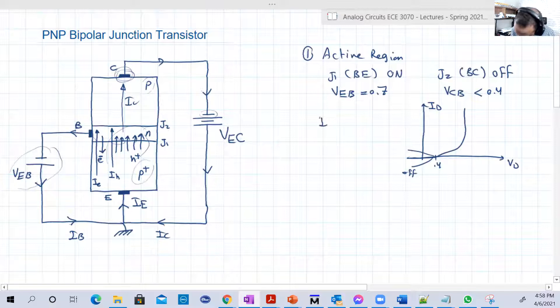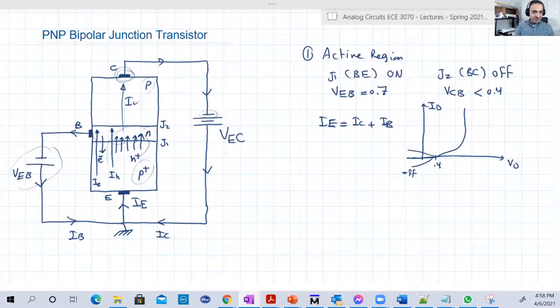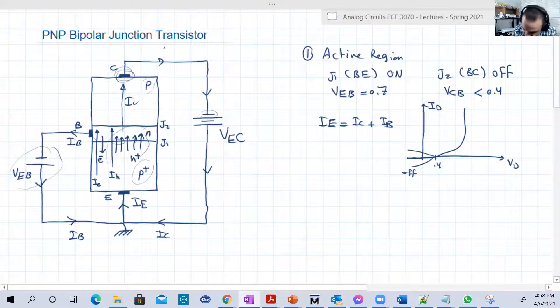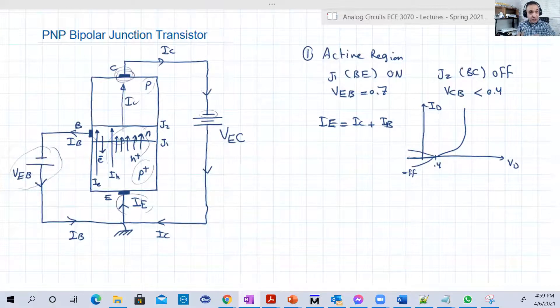And again, they will be joined again at the emitter. That's why again, IE equals IC plus IB. But now it's in opposite direction. So now, IB going out of the base, IC is going out of the collector, and IE is going into the emitter, very opposite to the NPN.